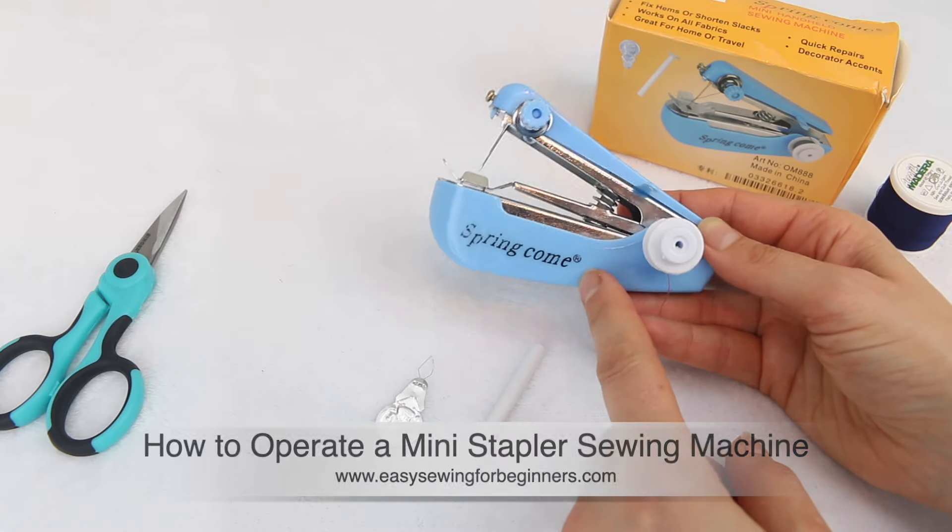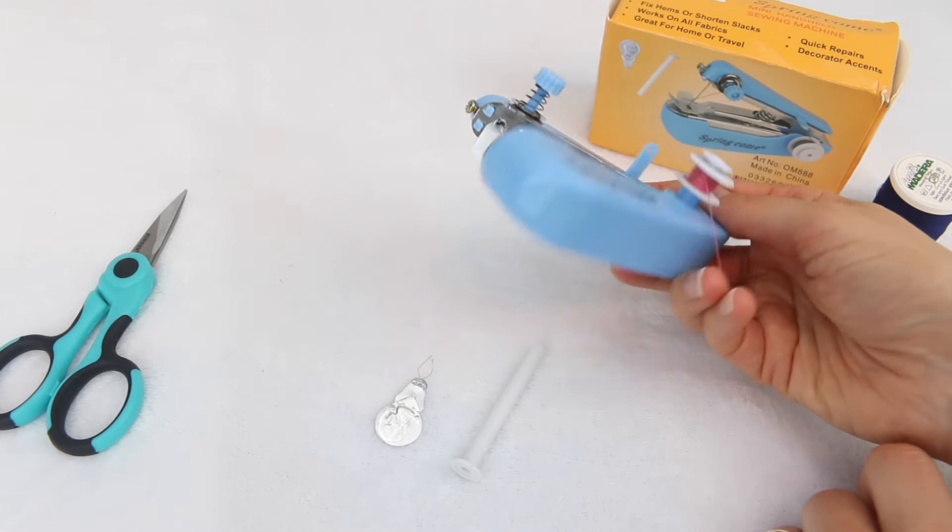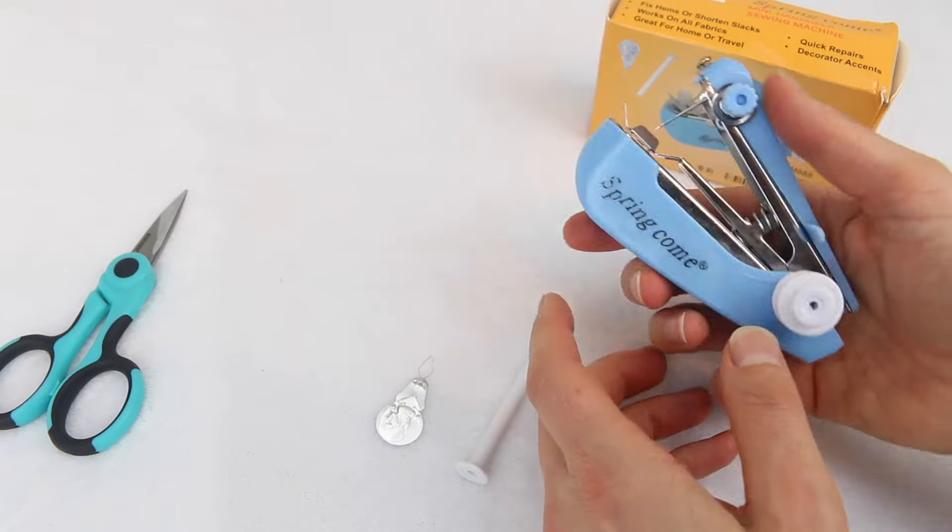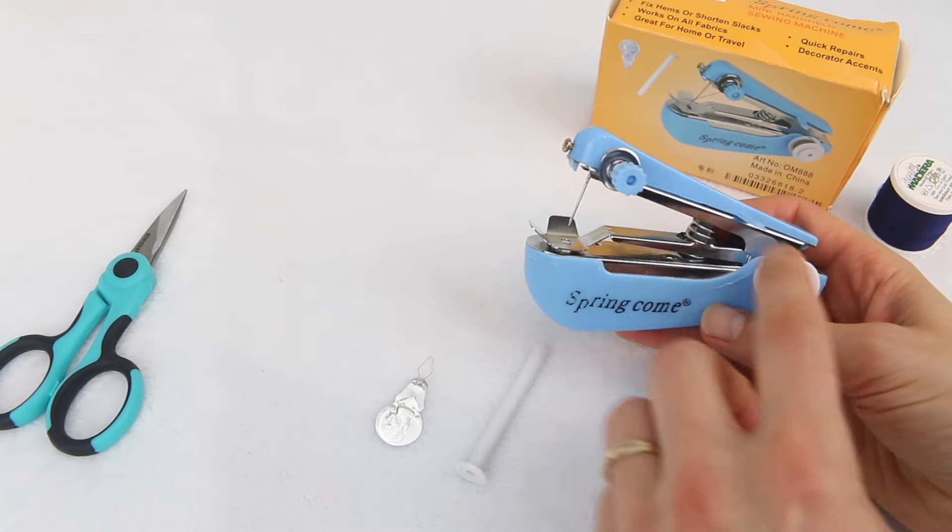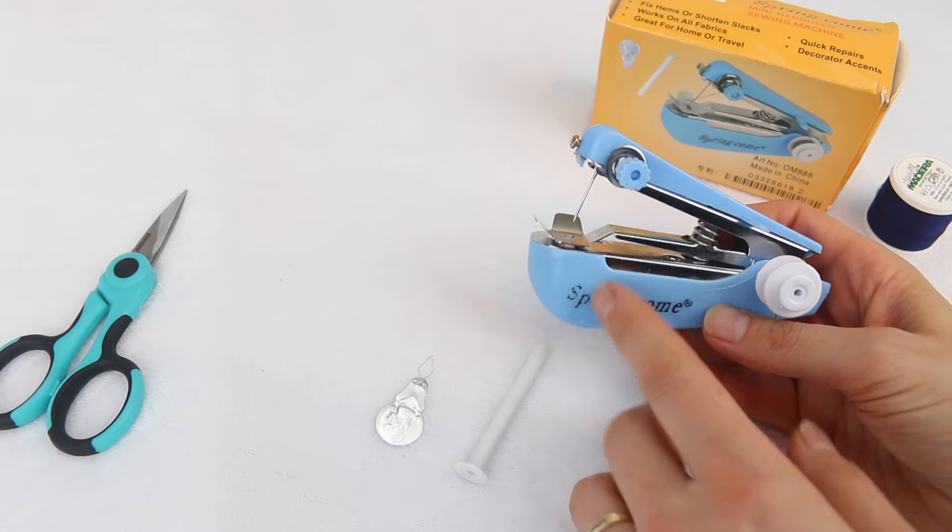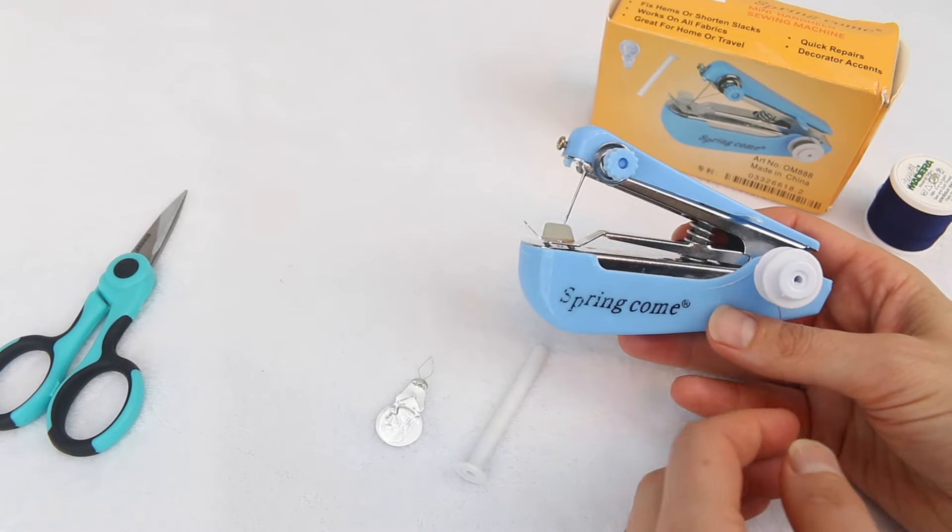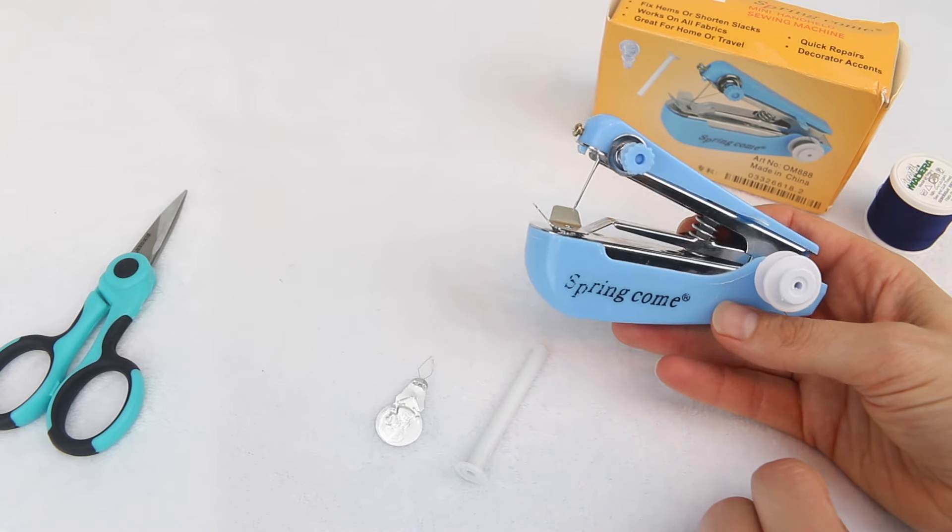Now this particular one I got from eBay, but I've seen them on Amazon and other online places and they're all fairly similar. It's a mechanical one, so you operate it just with your hand. I'm going to show you how to thread the machine up first and then I'm going to show you how to actually use it along with some extra tips as well to make sure that you're successful with these because they can be a little bit temperamental.